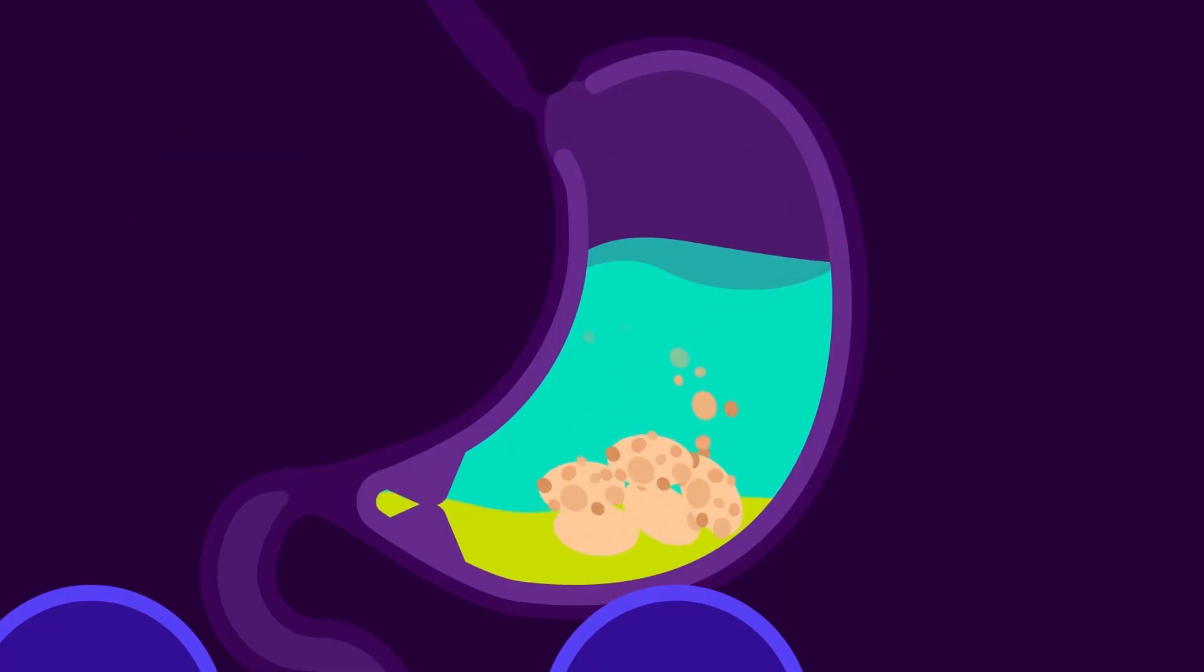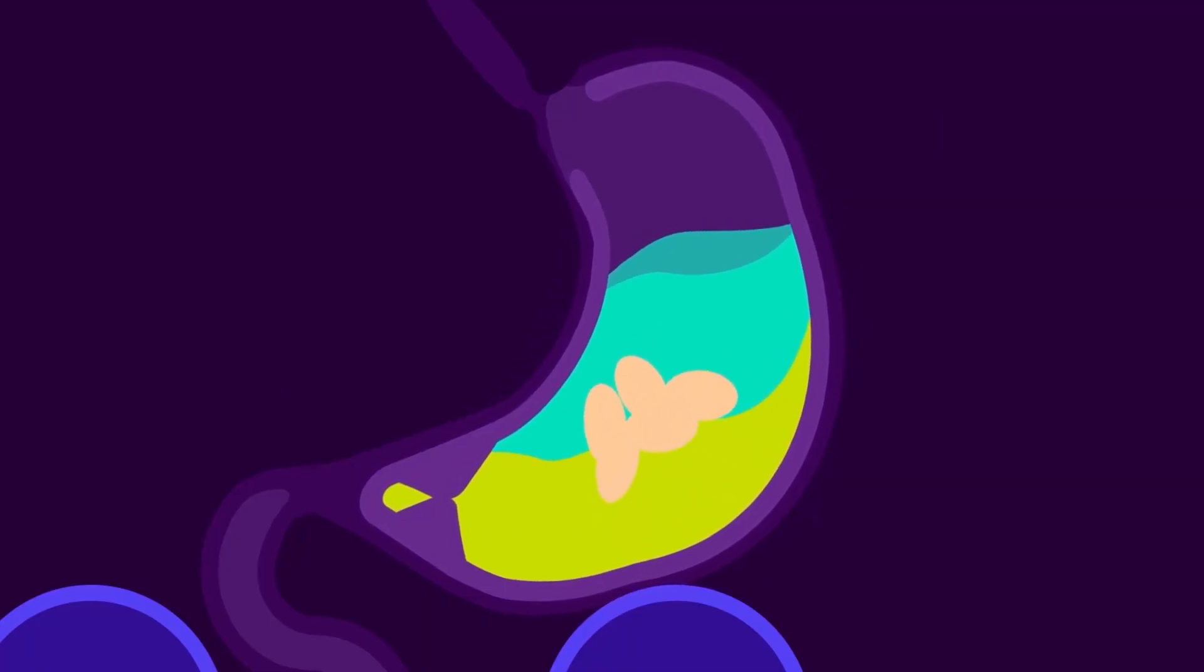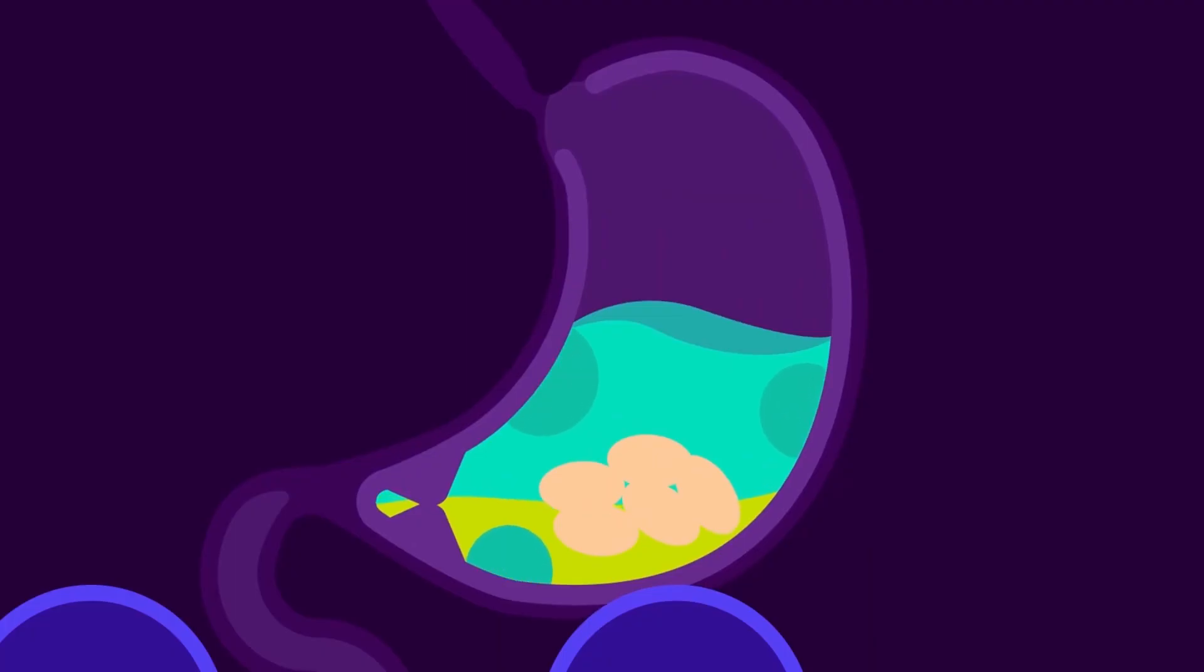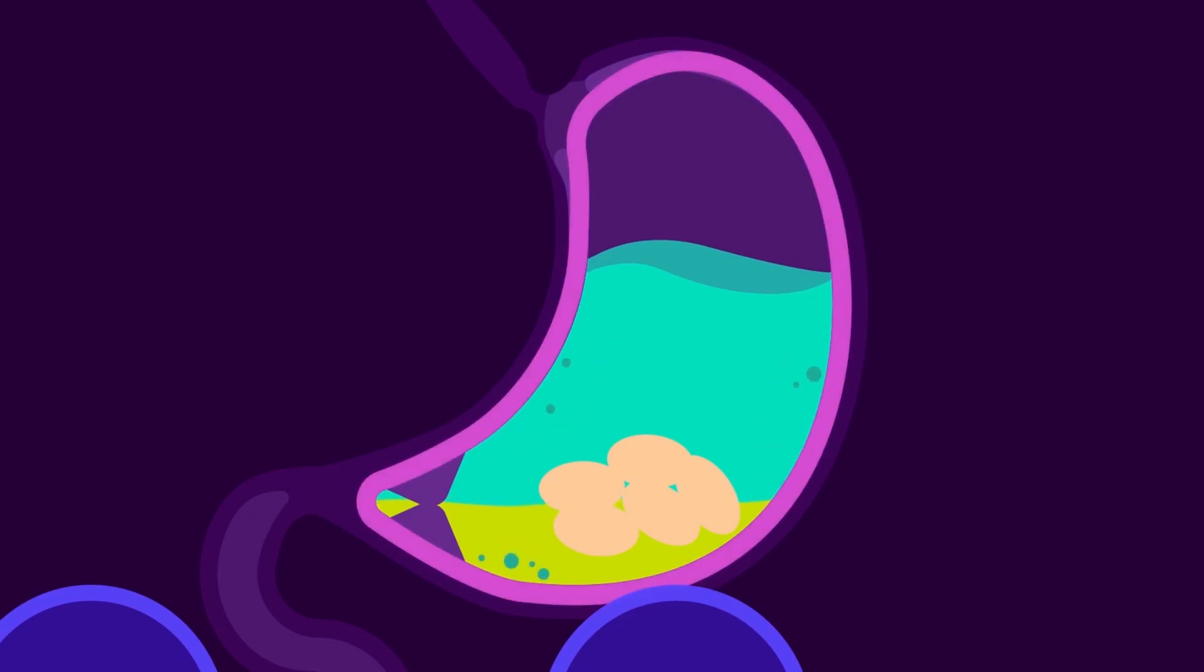It also kills the microorganisms we consume unconsciously along with our food and begins the digestion of the proteins we took in our diet. The stomach secretes gastric juice, hydrochloric acid, water, mucus, pepsin, and renin that continue the process of breaking down the food.